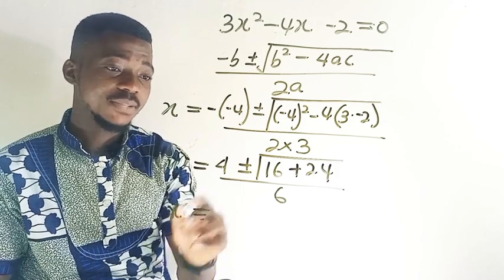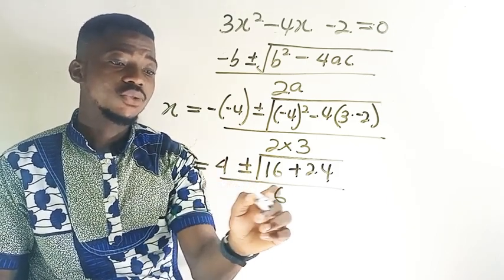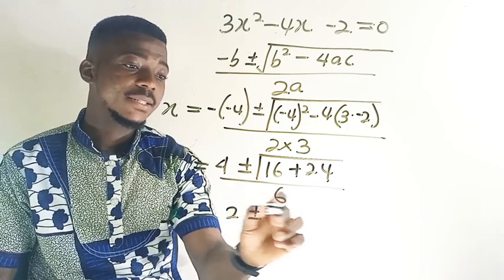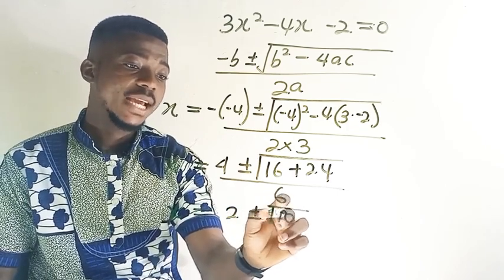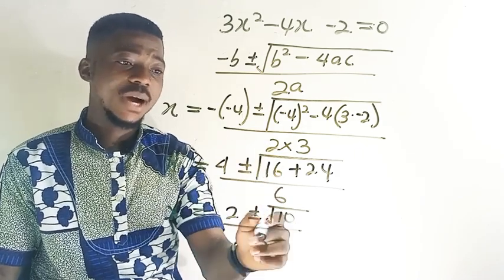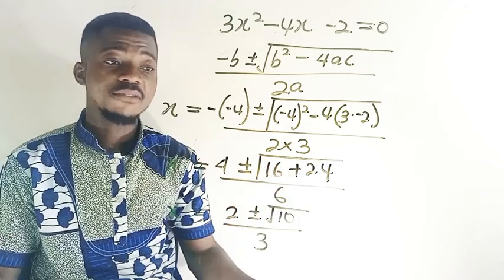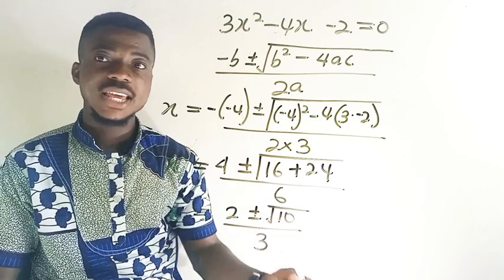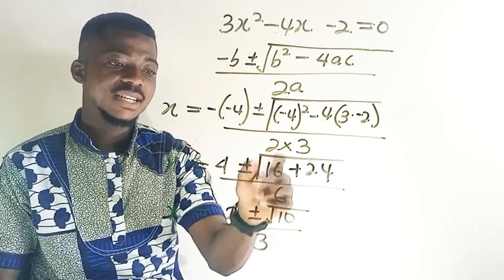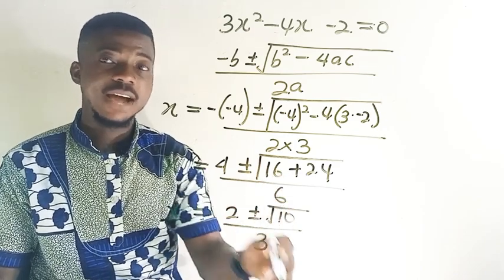So now this is what we're going to finally get. So here will be 2, you're going to have 2 plus or minus. This one will be 10, all over 3. I hope you know why it's like that because here will give us 40, 16 plus 24 will give you 40 and then root 40 is 2 root 10. So 2 over 6, 2 cancels itself 1 and then it goes into that 6 three times. That's why I have this one.